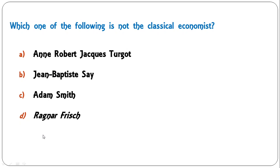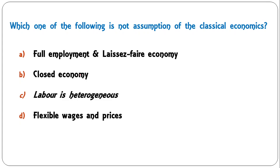Which one of the following is not a classical economist — N.N. Robert, J.B. Say, Adam Smith, or Ragnar Frisch? The correct answer is Ragnar Frisch, who is not a classical economist. All other three — J.B. Say, Adam Smith — are classical economists. So D is the correct answer.